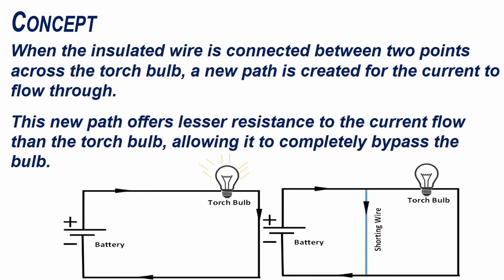When the insulated wire is connected between two points across the torch bulb, a new path is created for the current to flow through. This new path offers lesser resistance to the current flow than the torch bulb, allowing it to completely bypass the torch bulb.